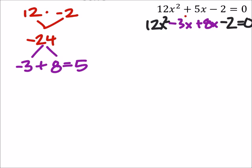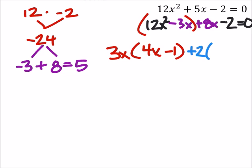So we're factoring by grouping. Let's look at the first two, looks like we can factor out a 3x from both these, so we've got 4x minus 1. And from the second set, I can factor out a positive 2, which gives me 4x minus 1.